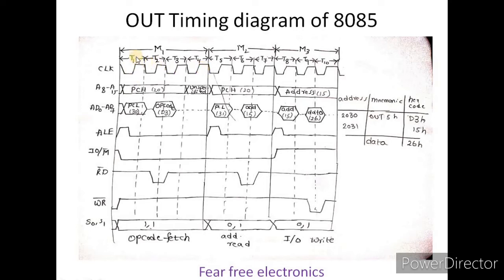In the machine cycle, we have subdivisions called T-states: T1, T2, T3. There are 4 T-states in this machine cycle. During the first T-state, the program counter content is transferred. The address 2030 is in the program counter, and the higher order address is transferred to A8 to A15.